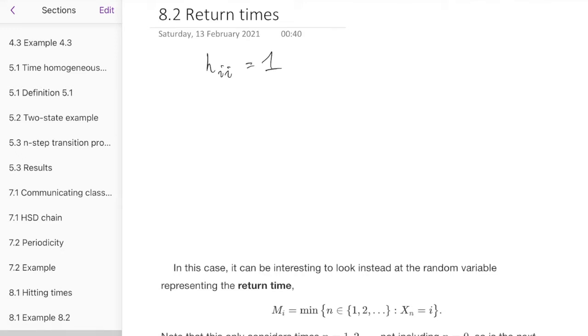So it's 1. And similarly, the expected time from a state until we get to itself, well, we're already there, so it's 0. Those are quite boring answers, right? To say that the hitting probability of a state to itself is 1 and the time to get there is 0.